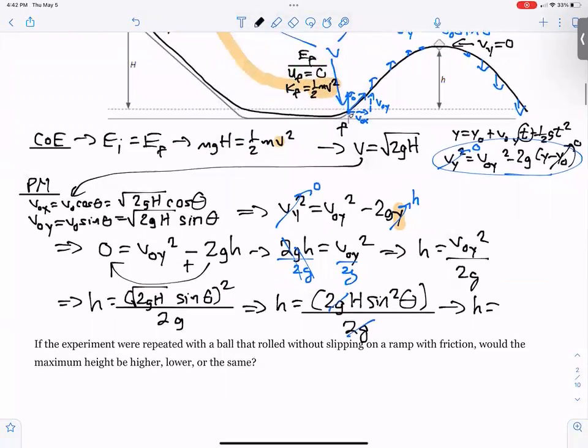And h, little h, the maximum height is equal to big H, which is the height of the hill, times sine squared theta.